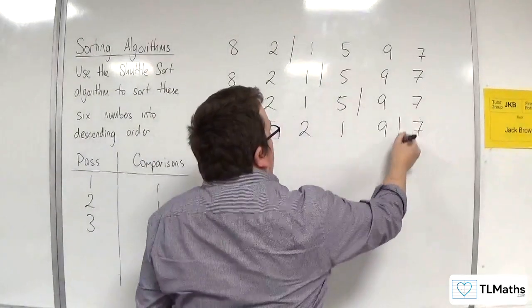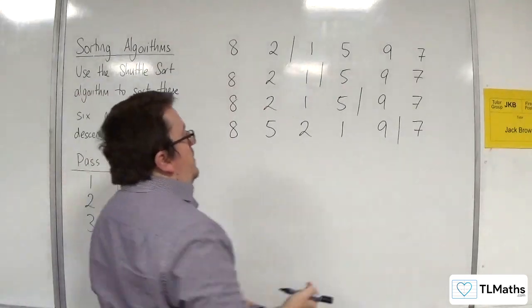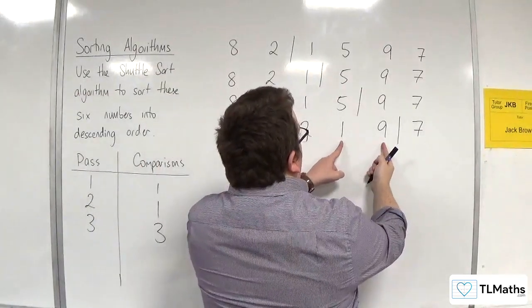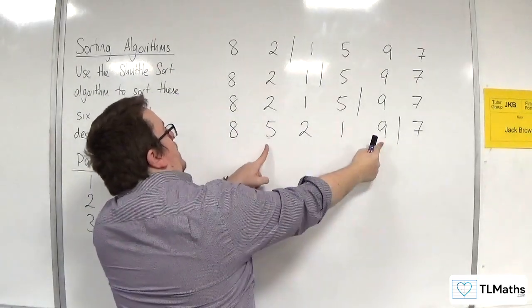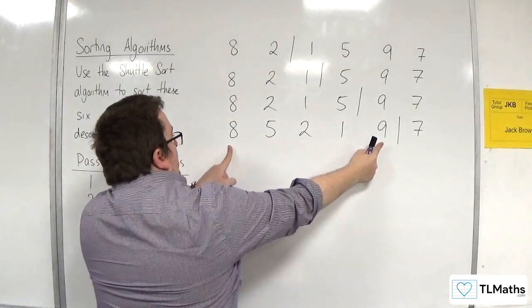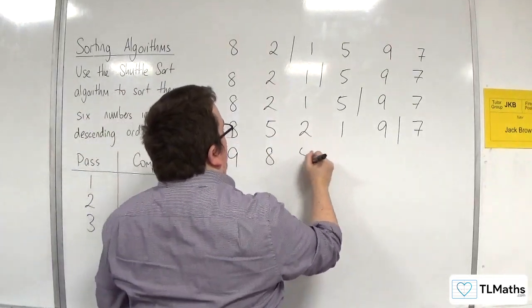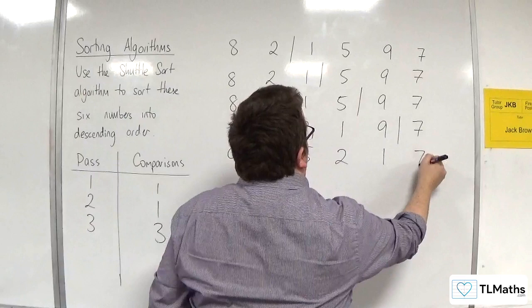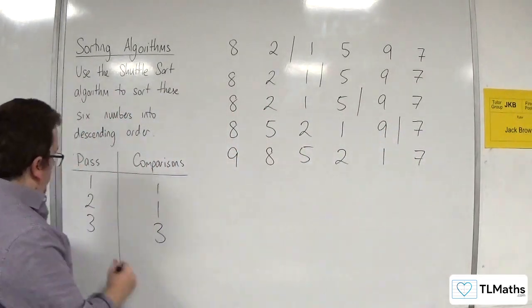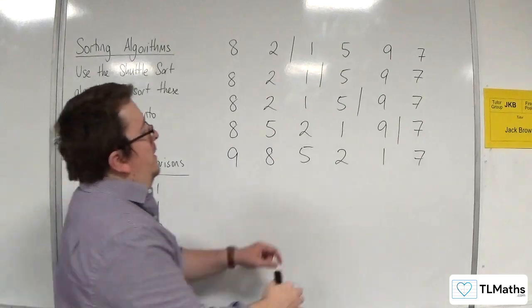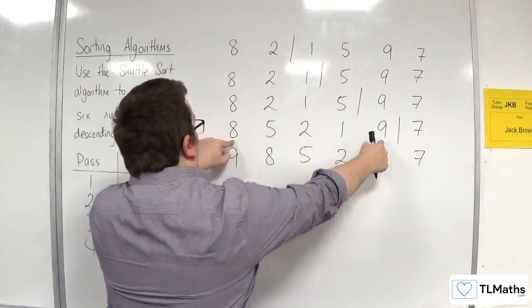Then we bring 9 into the mix. 9 is going to get compared with 1 — they will swap. Then with 2 — they will swap. Then with 5 — they will swap. Then with 8 — they will swap. So the list becomes 9, 8, 5, 2, 1 — 9 gets shuttled into the correct position. On that fourth pass, 4 comparisons were made.